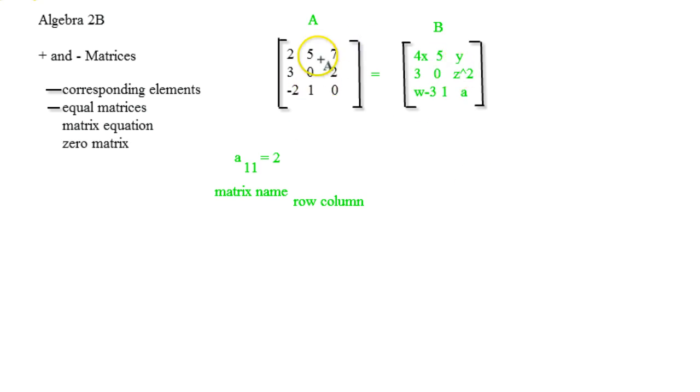Let's say I have two matrices that are going to be equal. That means corresponding spots are going to be equal. I can actually set up some equations. For example, the 2 equals the 4x, so 2 equals 4x, and that's one equation I can work with.